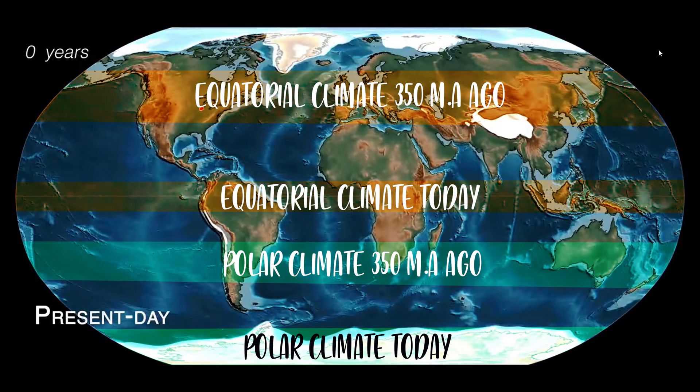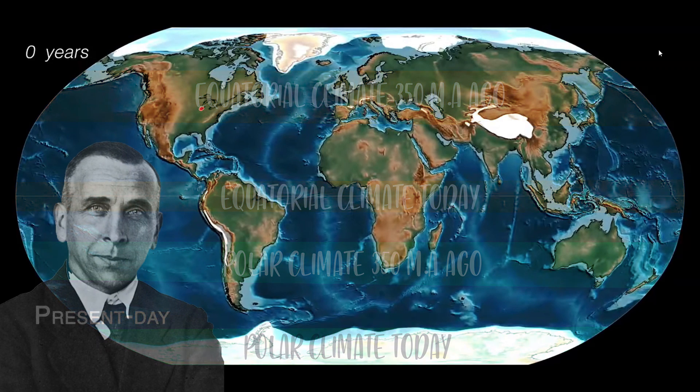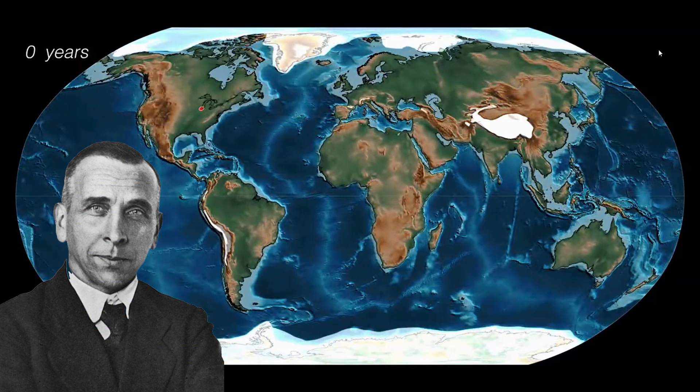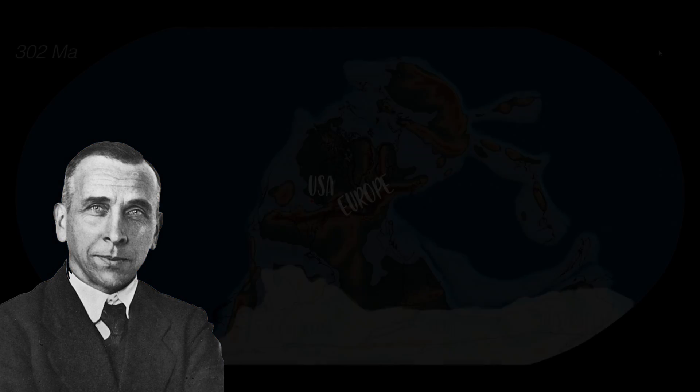So Wegener started thinking, this was really a perplexing problem. But he found the solution. He came to the conclusion that if, as he thought, there had been a supercontinent in the southern hemisphere...